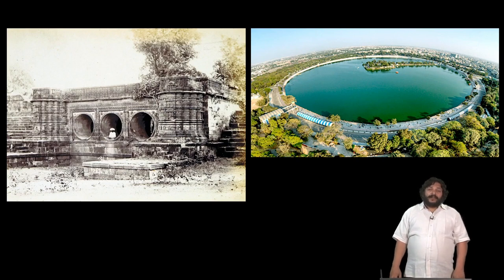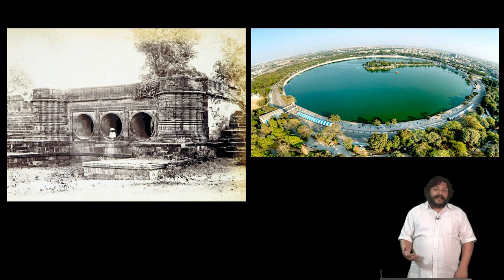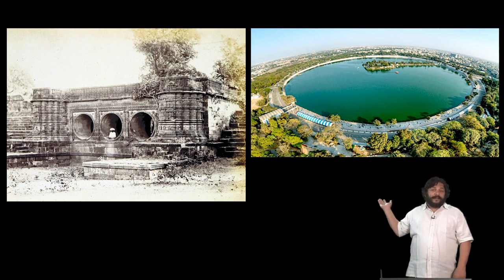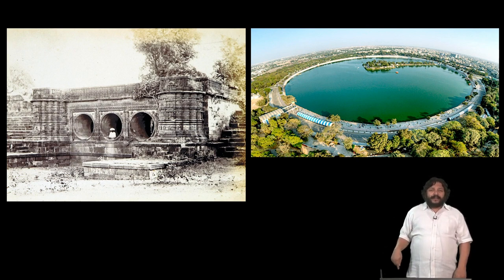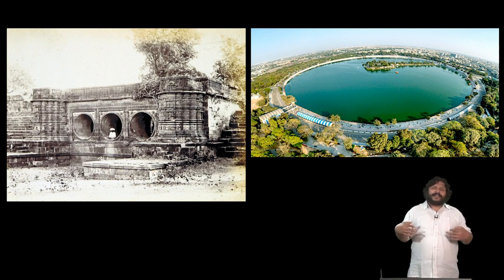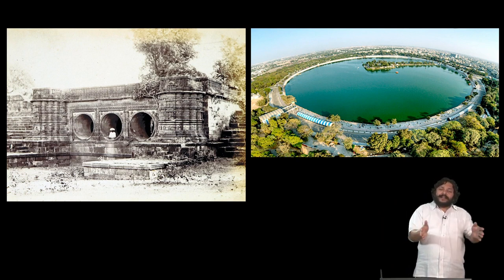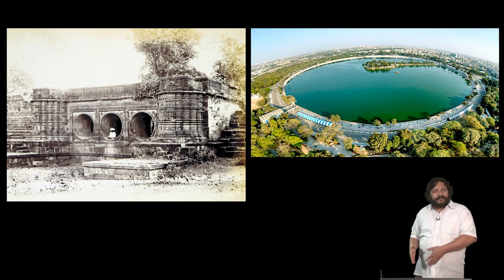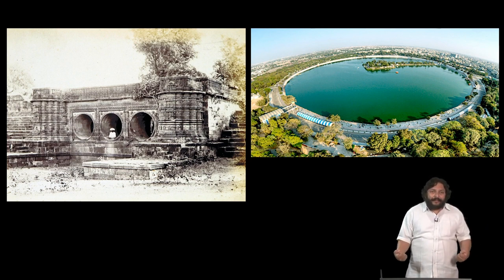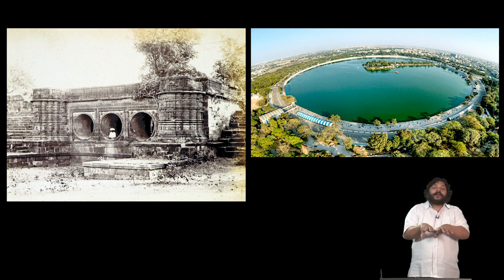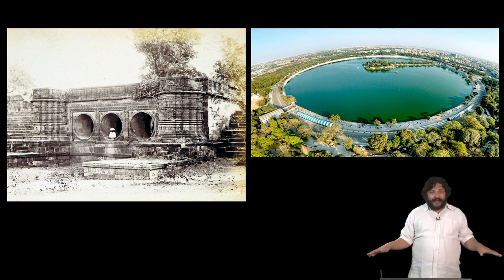In Gujarat, the sultans of Gujarat in the 15th century built the Hauz-e-Qutbi, now called Kankaria Lake — a perfectly circular water body in which the water sluices you see on the further side would channel in water. A whole system of hydrology was understood: how water would collect, how it would naturally channel itself into depressions and low-lying areas, how it could be tapped to fill up great reservoirs, and how from these reservoirs the water would be distributed through a network of underground pipes into settlements that the sultans built.